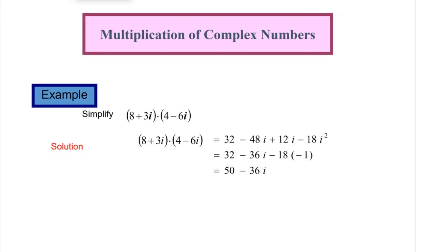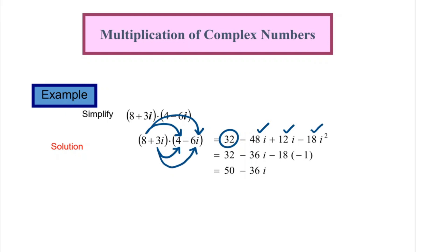Multiplication of complex numbers. Example: simplify (8 + 3i)(4 − 6i). First, we expand it. Then we substitute i² with −1. We simplify further and get the answer.